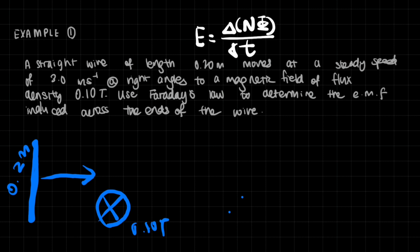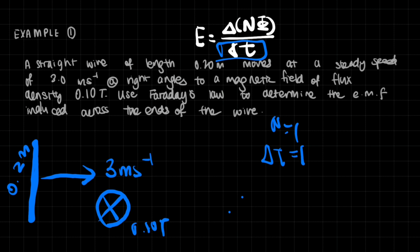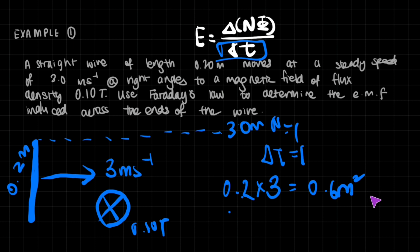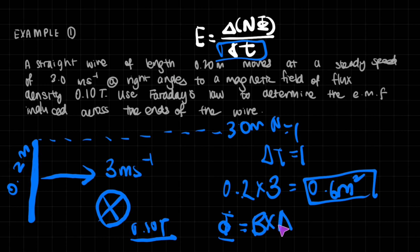To make things easier, N equals one because there are no turns — it's just one wire. I'll let Δt equal one second, so in one second the wire moves three meters. That means the area swept is 0.2 times 3 meters, which equals 0.6 meters squared. The magnetic flux in that area is flux density times area: 0.10 times 0.6, which gives us 0.06 Weber. So now we have all the variables we need.